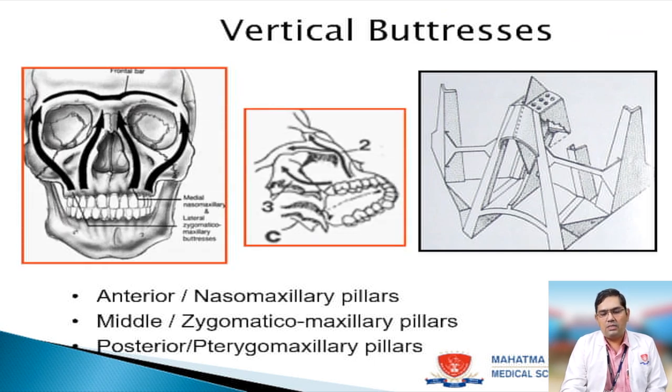Vertical buttresses are three in number: anterior, middle, and posterior, named as nasomaxillary, zygomaticomaxillary, and pterygomaxillary.